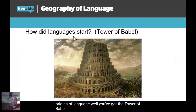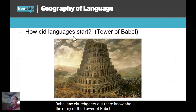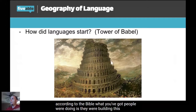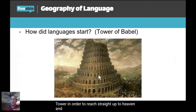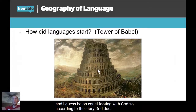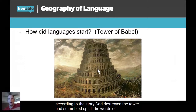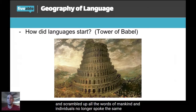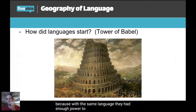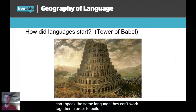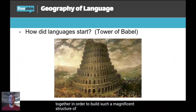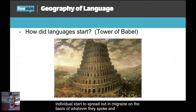How do languages start? What are the origins of language? Well, you've got the Tower of Babel. Any churchgoers know about that story? According to the Bible, people were building a massive tower to reach up to heaven and be on equal footing with God. God destroyed the tower and scrambled the words of mankind — individuals no longer spoke the same language, because with a common language they had enough power to rival God. So individuals began to spread out and migrate based on whatever language they spoke.